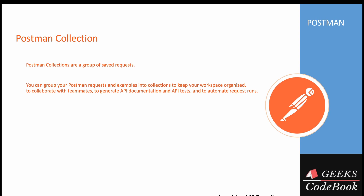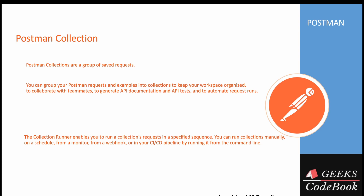You can group your Postman requests and examples into collections to keep your workspace organized, to collaborate with teammates, to generate API documentation, API tests, and to automate request runs. There is also a collection runner — you can enable it to run requests inside a collection in a particular sequence, or run the entire collection manually, on a schedule from a monitor, or from a webhook. You can also run the entire collection using CI/CD tools like Jenkins.